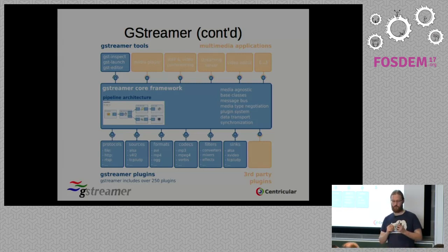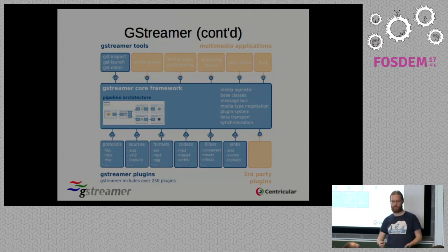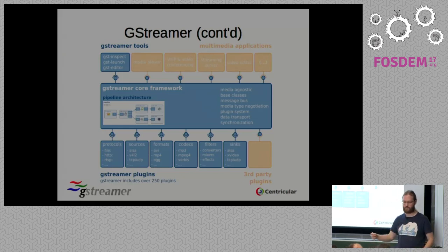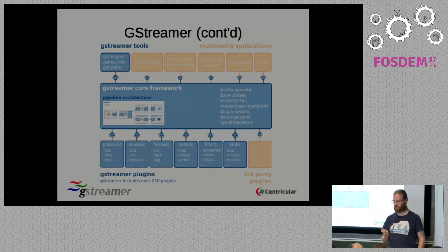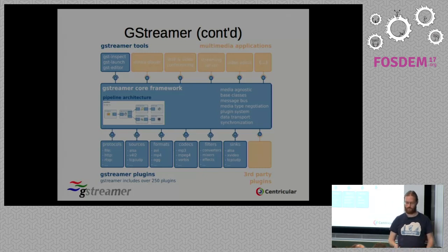At the very core we have a very abstract core framework which is completely media-agnostic — it doesn't know anything about audio or video. From an application point of view, you use this abstract API to build some kind of processing graph. All the actual functionality is in the elements I showed before, and all these elements are provided as plugins — not part of GStreamer core, but extensions that can be loaded at runtime. With this design we have a very good split of concerns, and as an application you build on top of this generic API.